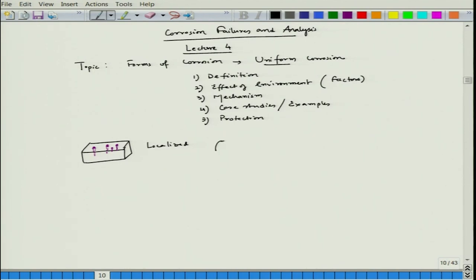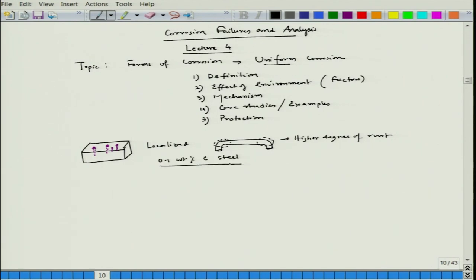Let us say I have a rod like this. If you leave it in the environment, you will see that a certain portion would have a higher degree of rust — and I am talking about, let us say, 0.1 weight percent carbon steel. Both cases it is localized. If you have a container and the edge is very sharp, you will see that corrosion will be localized at that edge. As the name suggests, localized means it can never be uniform.